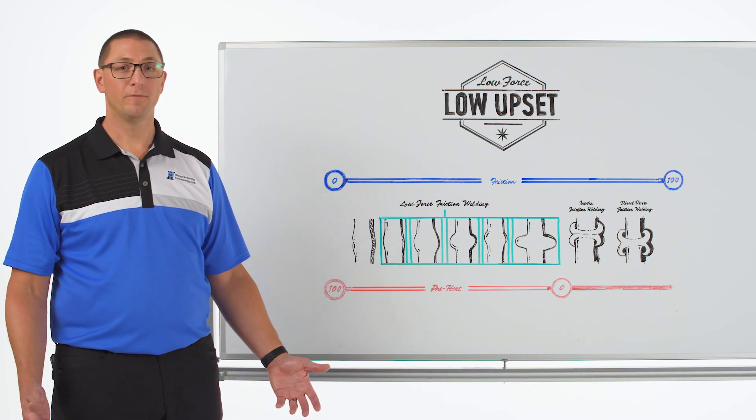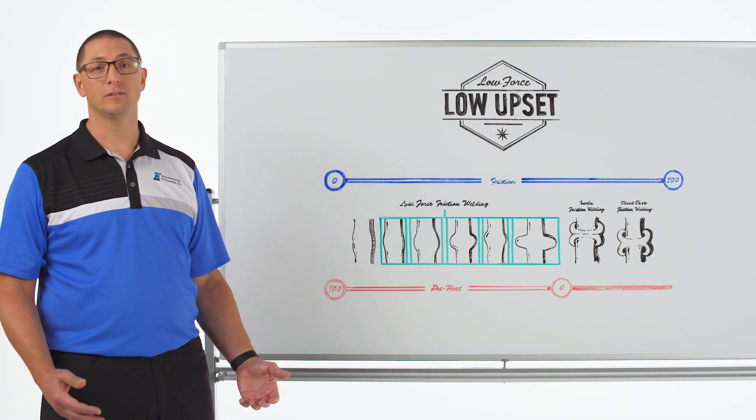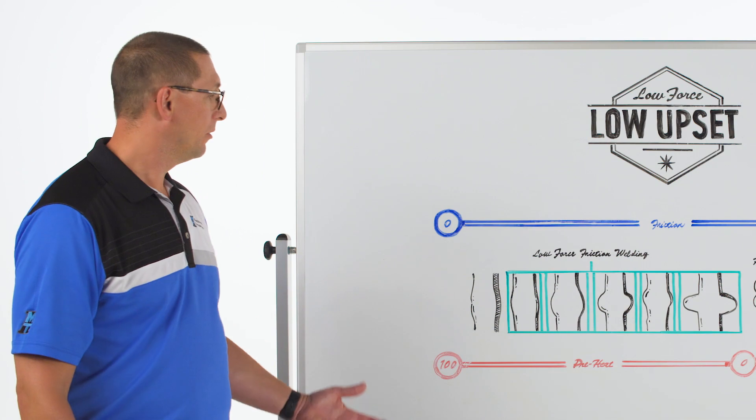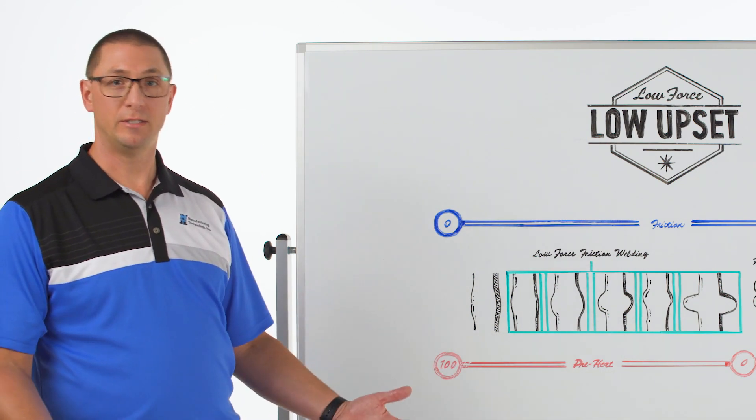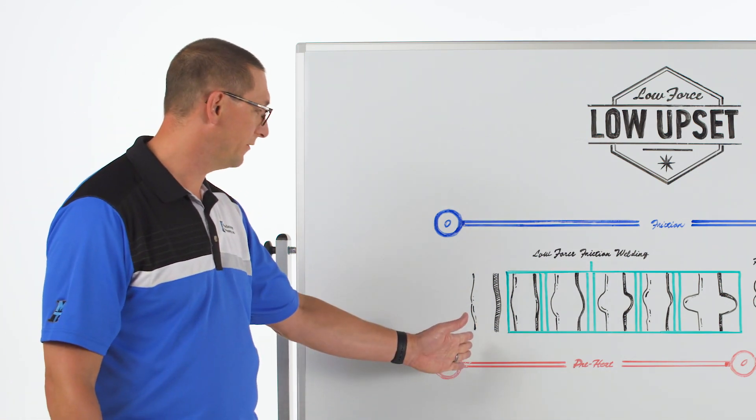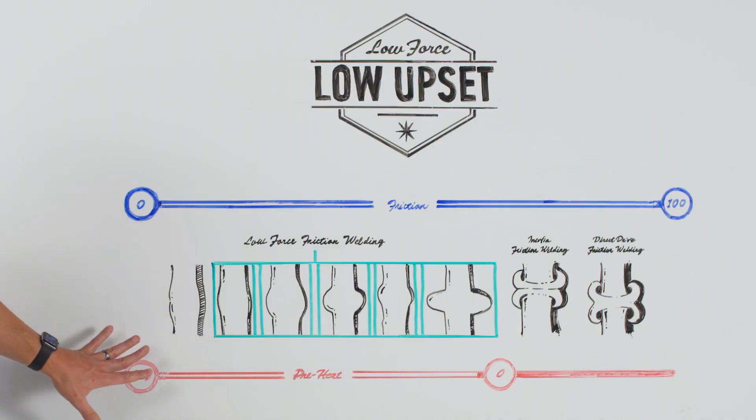Today we're going to talk about low force friction welding and making welds with low upset. I'll remind you that in a previous episode we talked about this continuum where on one side we have diffusion bonding which is all preheat and force with no relative motion.